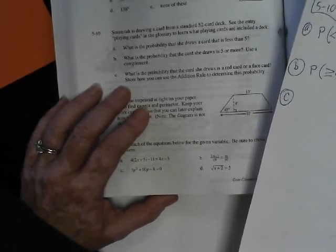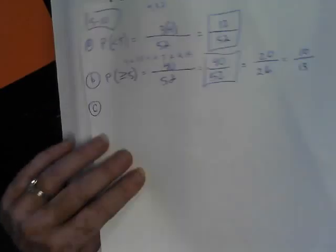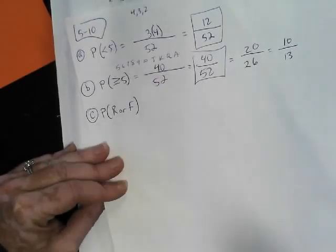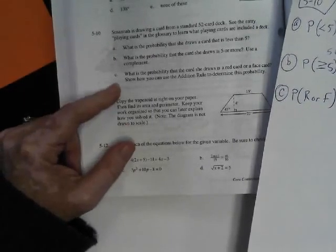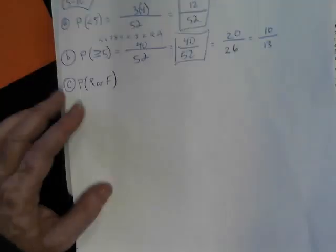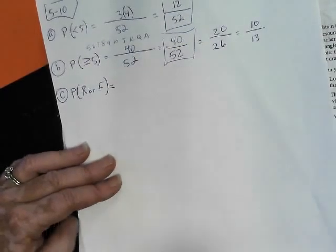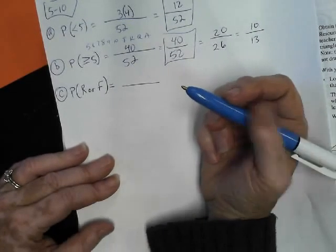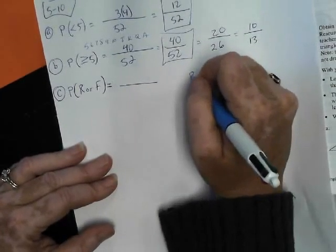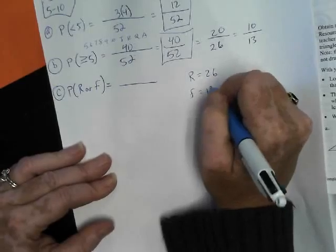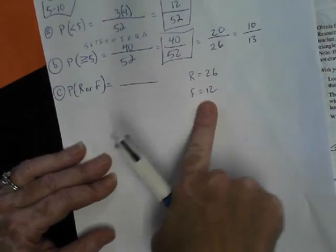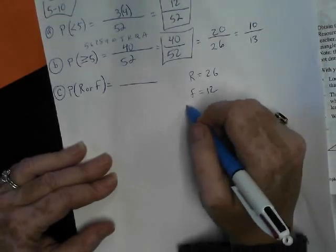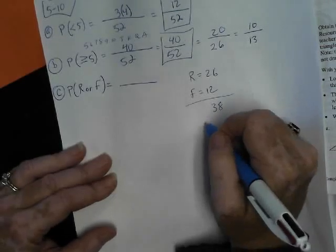Okay. What is the probability that the card she draws is a red card or a face card? Hold on a second. Probability of red or face. And what else? There's something else. Show how you can use the addition rule to determine the probability. Well, okay, so I think I'm going to do it without. I already know how many red and faces there. 26 for the red, right? Yes, 26 for the red. 12 face cards. But some of the face cards are red, so you have to subtract. So you need to subtract.